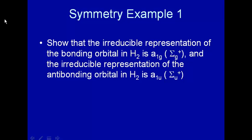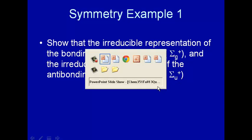Here's an example using symmetry. We want to show that the irreducible representation of the bonding orbital in H2 is a1g — but if you look at the character tables, they've changed the notation on us — that's sigma g plus. And the irreducible representation of the anti-bonding orbital in H2 is a1u, which in the new notation is sigma u plus. Alright, let's try to do that.